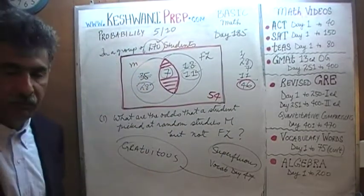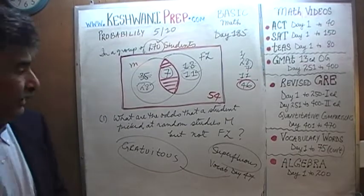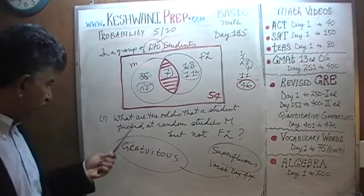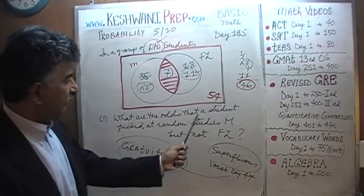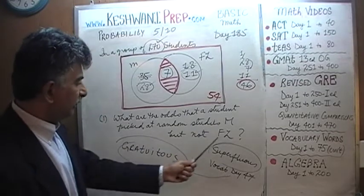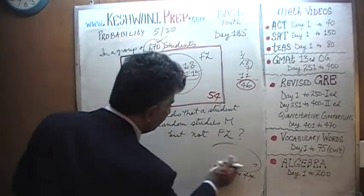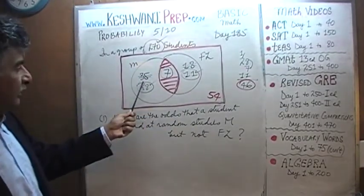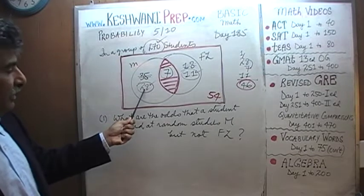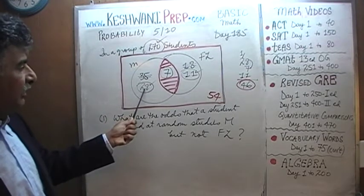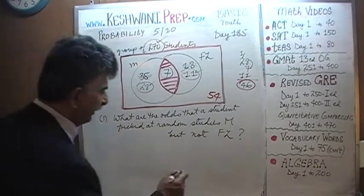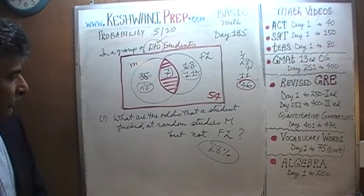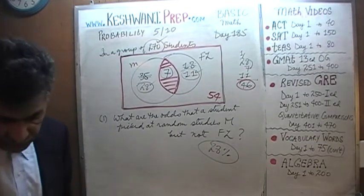Once the problem is set up properly, we can answer any question. What are the odds that a student picked at random studies music but not foreign language? That's right here: 28 people out of 100 study music but not foreign language. The answer is 28%.